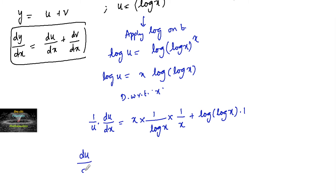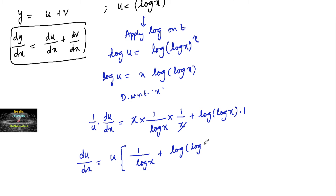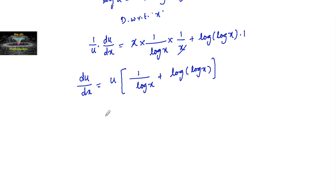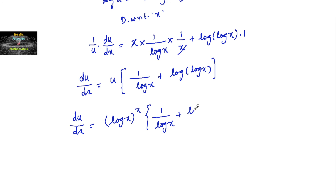So du/dx is equal to u times (1/(log x) + log(log x)), which gives du/dx equal to (log x)^x times (1/(log x) + log(log x)).